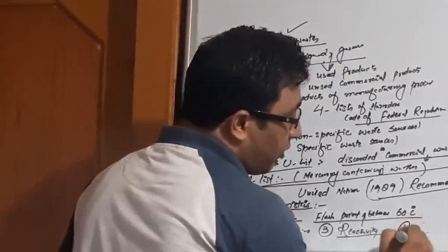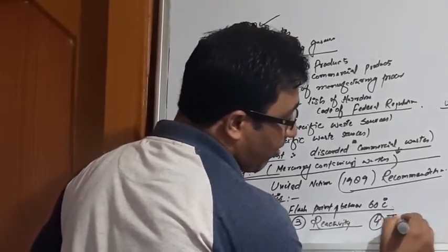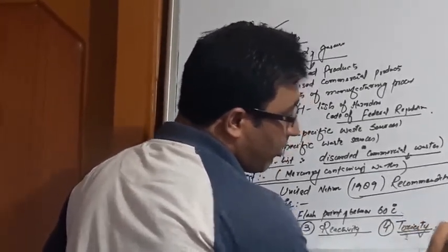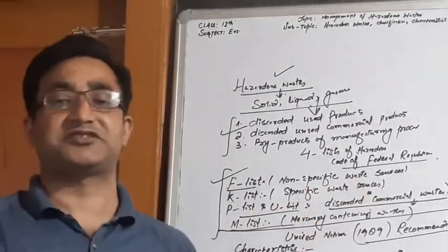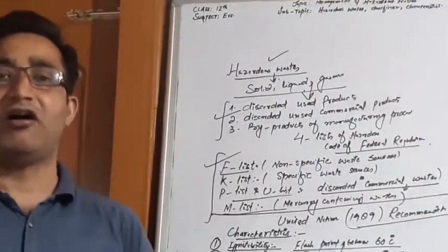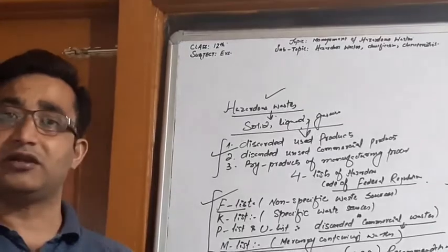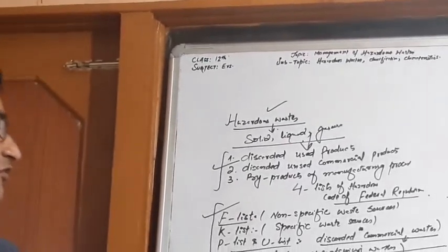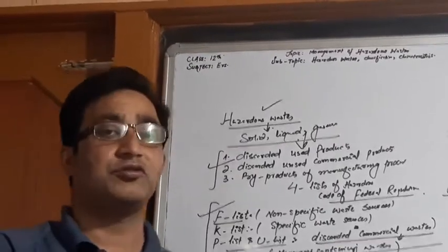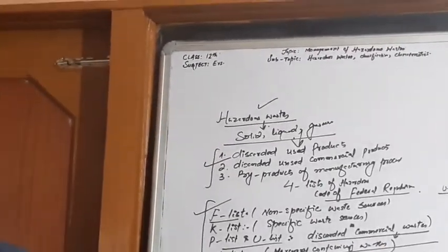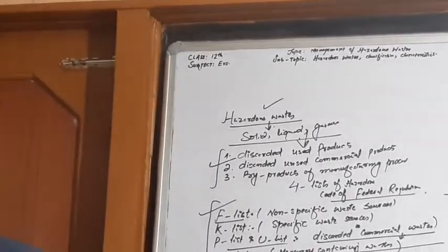Number four property is toxicity. These are such wastes which when ingested or absorbed may prove fatal to the living organisms. Toxic wastes are also harmful. They can also be described as hazardous waste.